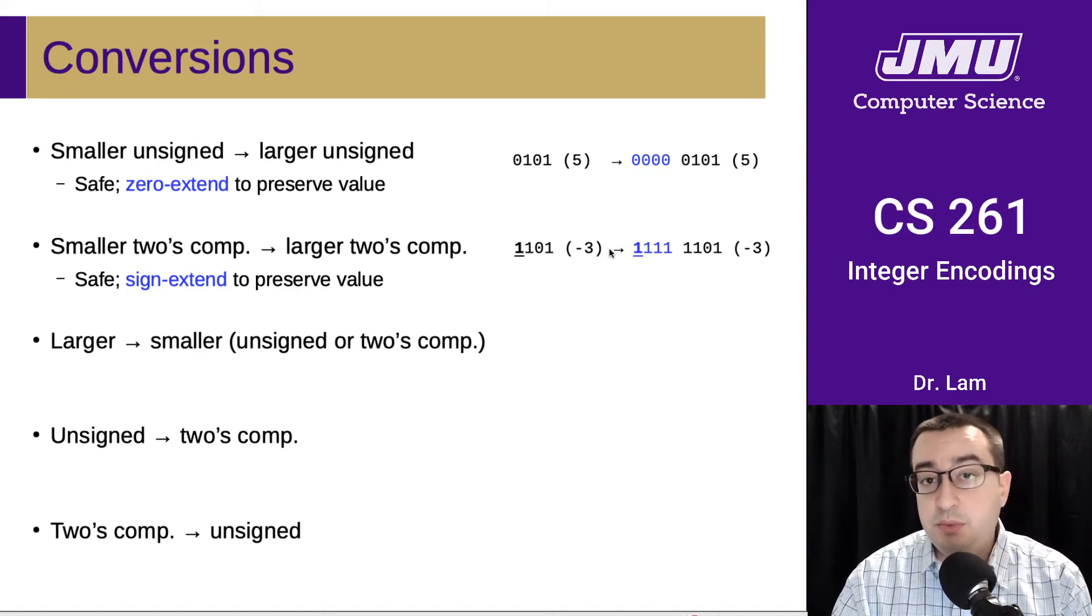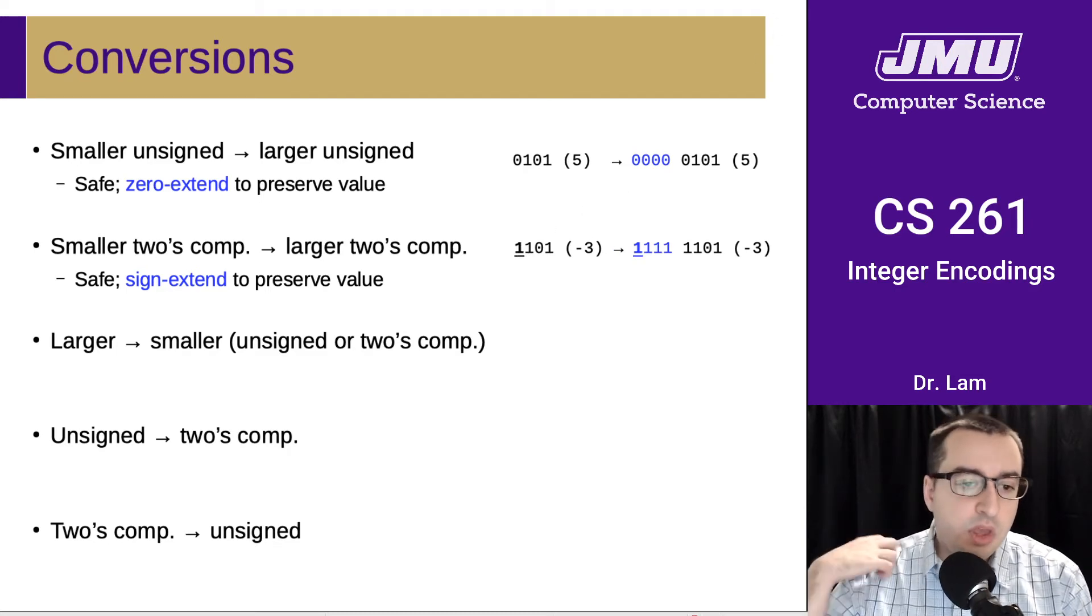So basically, you extend using the first bit. So if the first bit is zero, then you pad with zeros. And if it is a one, you pad with ones.